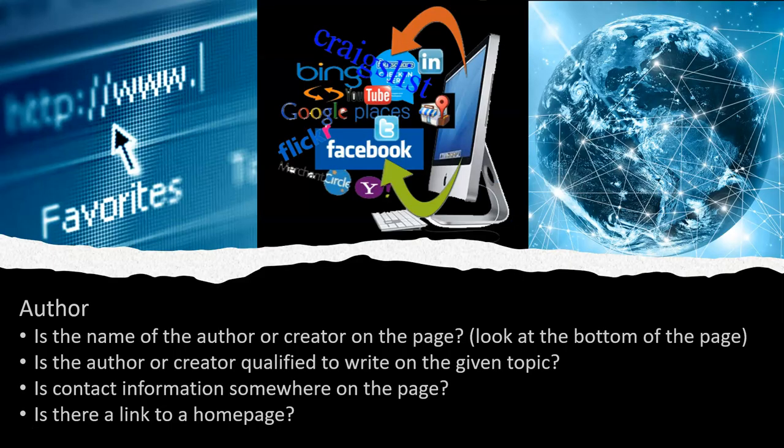Author: Is the name of the author or creator on the page? This information might be located at the bottom of the page, or it could be under a link that says 'About Us.' Is the author or creator qualified to write on the given topic? Click on their name and find out who they are. Is the contact information somewhere on the page? Is there a link to a homepage or a Facebook page?